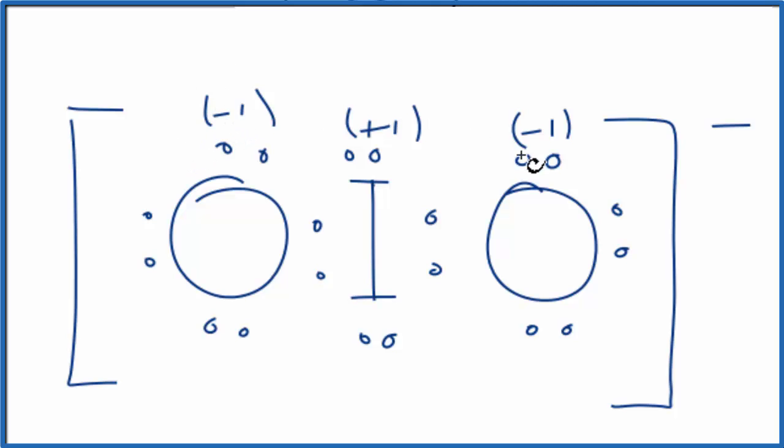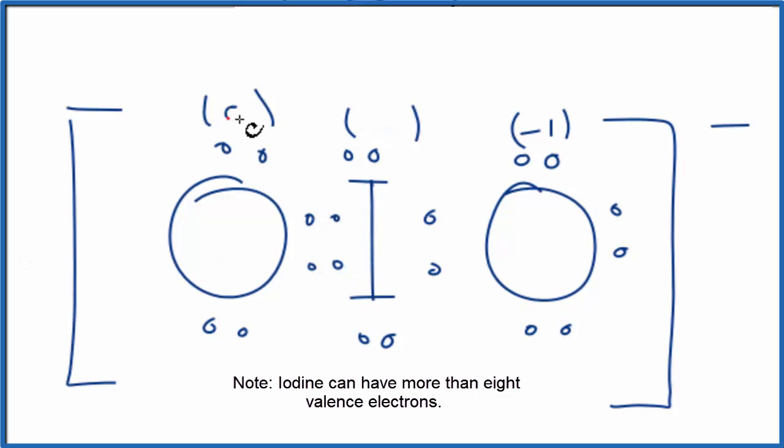If we form a double bond, let's move these two electrons here. Now this oxygen has a formal charge of 0, the iodine has a formal charge of 0, and this oxygen still has a formal charge of -1.